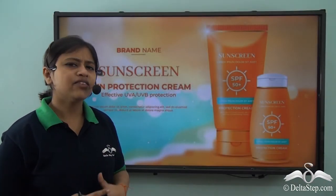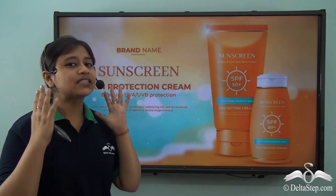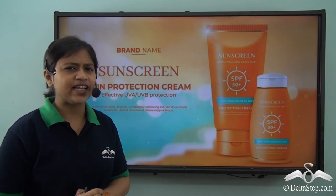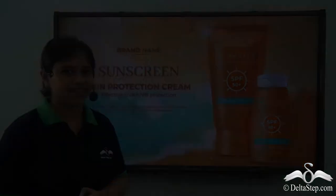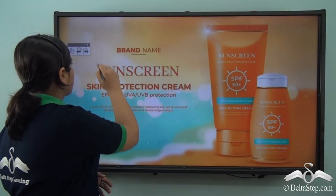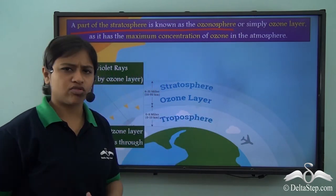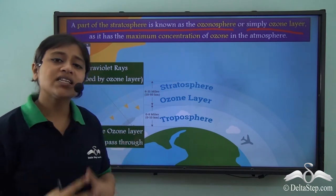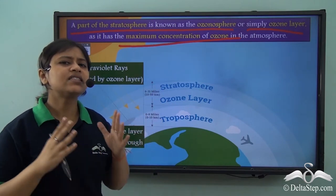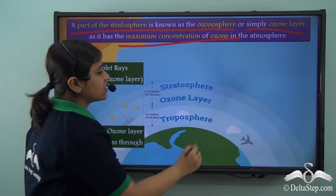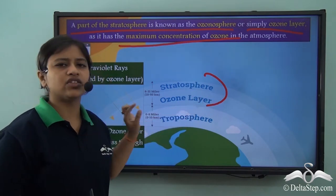You must have seen advertisements on different types of sunscreens — they protect our skin from the harmful ultraviolet rays of the sun. The earth also has a natural sunscreen, and that is the ozone layer. A part of the stratosphere is known as the ozonosphere or simply the ozone layer, and it has the maximum concentration of ozone in the atmosphere. There is high concentration of ozone in the lower region of the stratosphere.